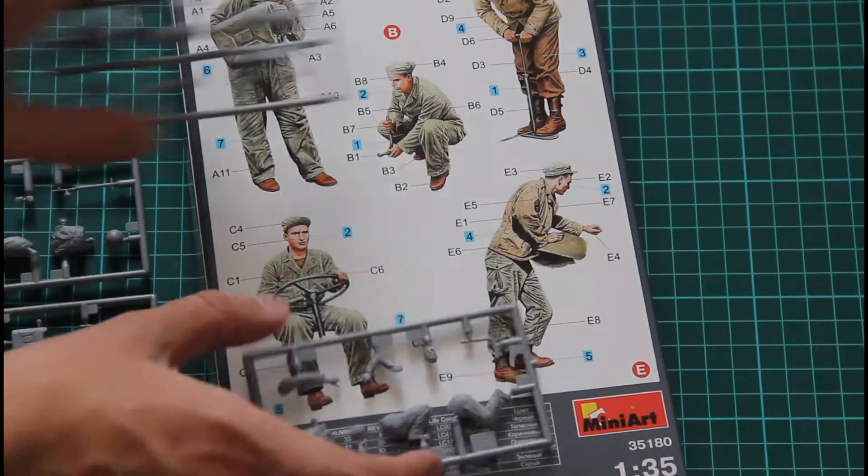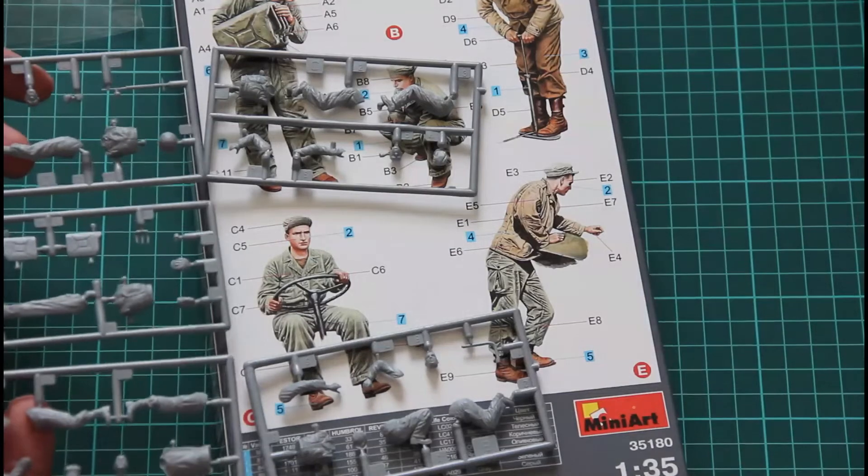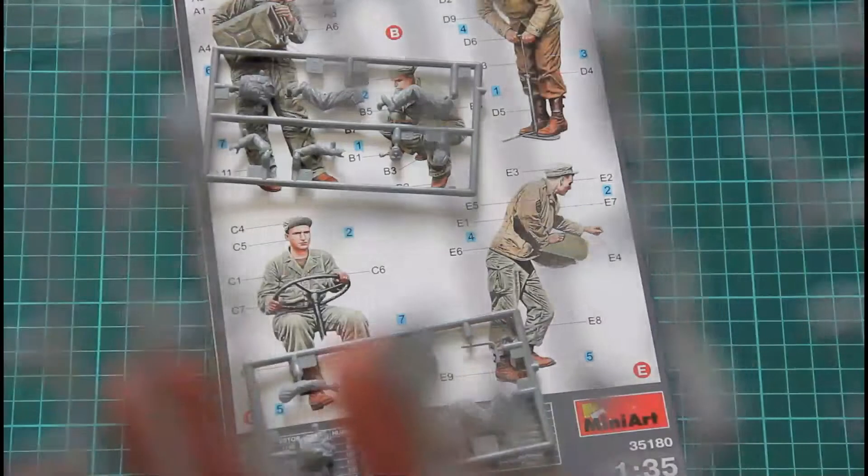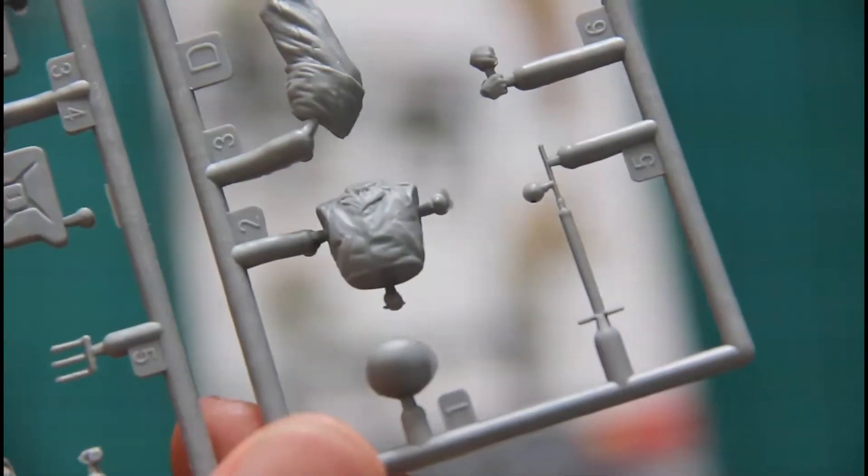So in total we can say that we have 5 sprues as you can see here. But those 3 are connected with one large, let's say, tube. So I will focus the camera and show them one by one.